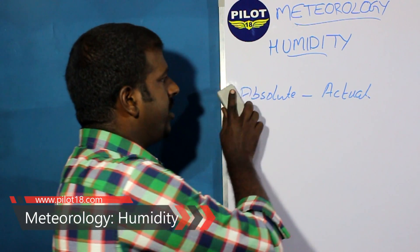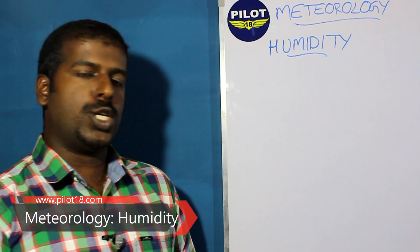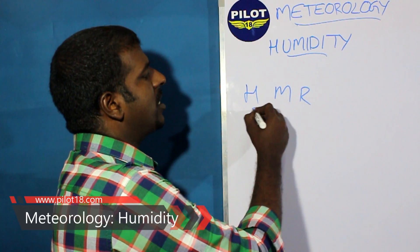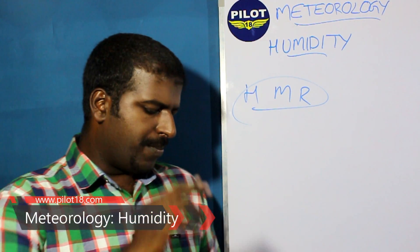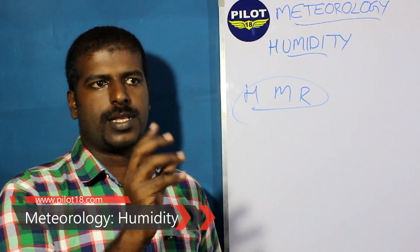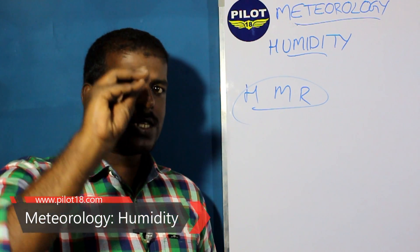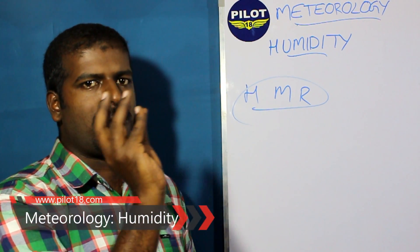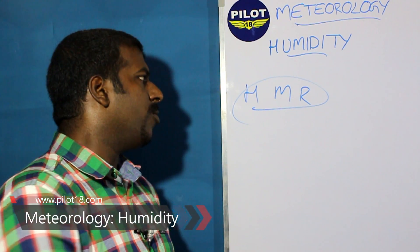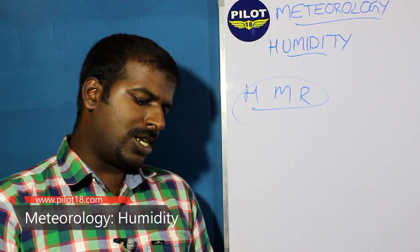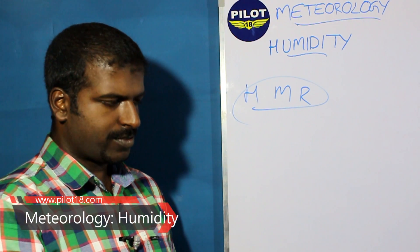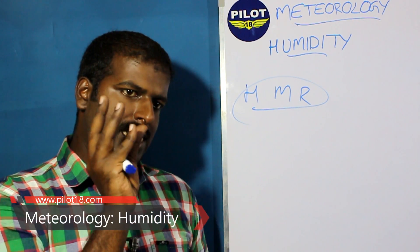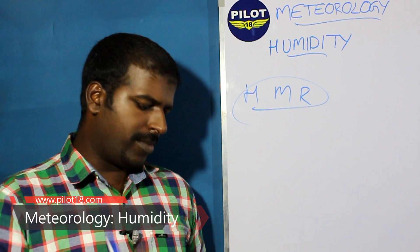Then comes humidity mixing ratio. Humidity mixing ratio is the mass of vapor present in a given mass of air. Inside that mass of air there is a given mass of water vapor — that is called the humidity mixing ratio. It is measured in gram per kilogram or gram per meter cube, because it is mass of vapor per unit volume of air — just like density.